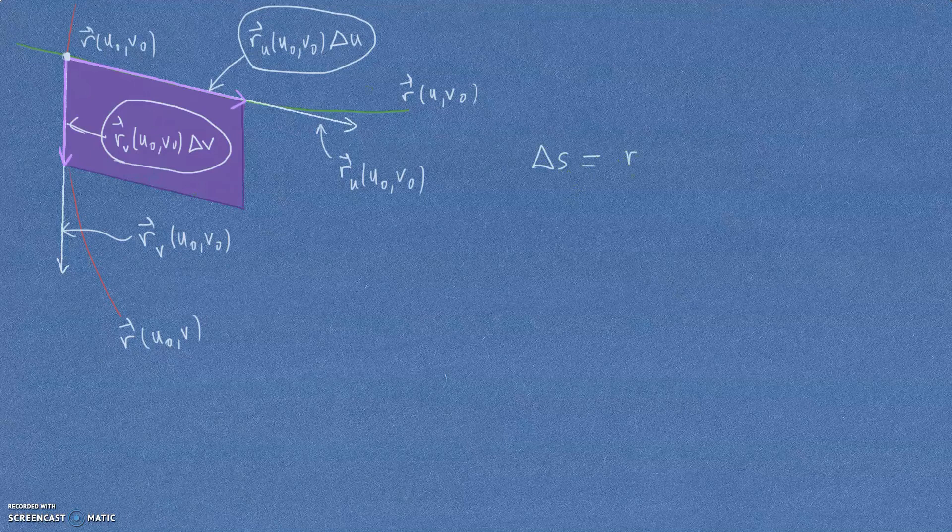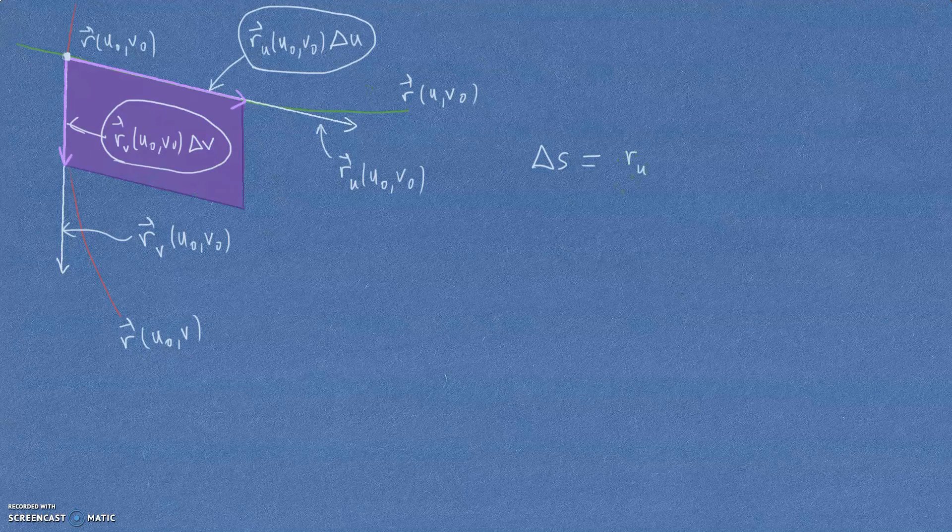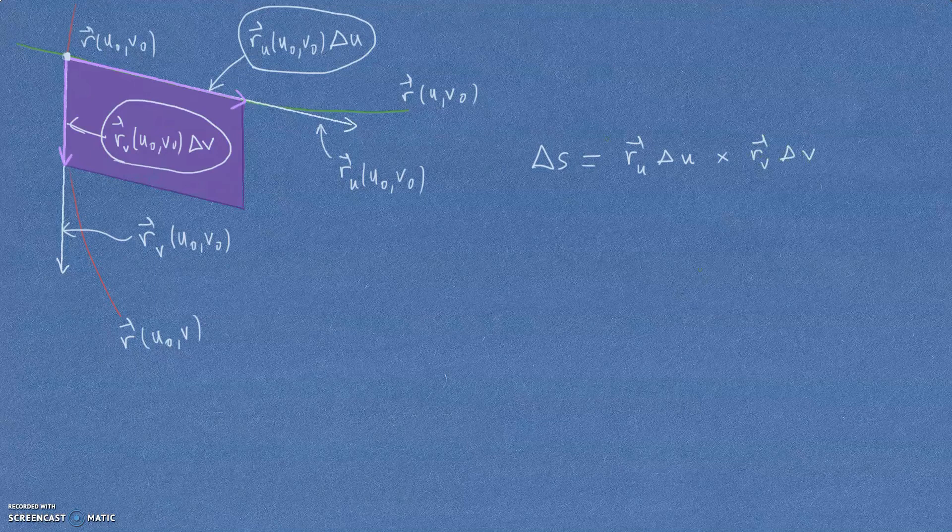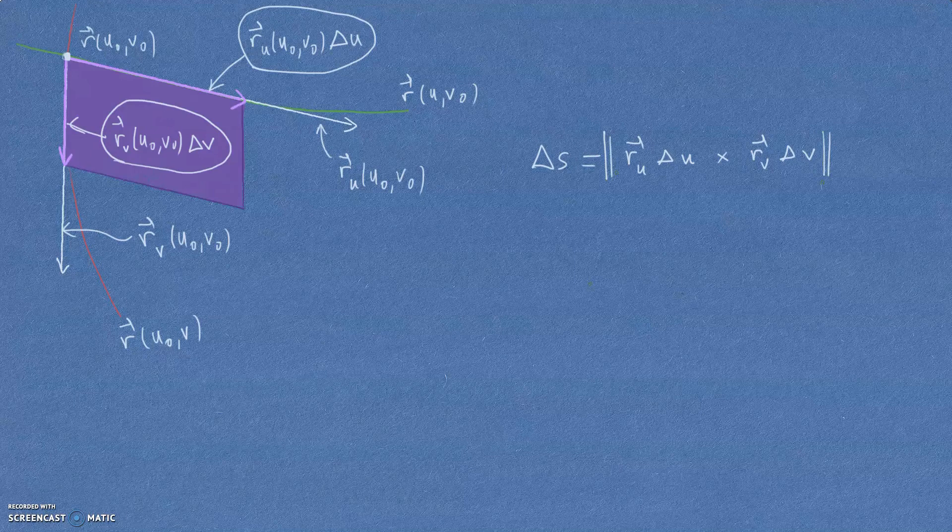Now, as I write it down, I think I'll drop the U0, V0 from the notation just to make it a little bit easier to write. But remember, they're being calculated at a particular place. And that times delta V. Okay, except, of course, we need the magnitude of that. That is what we want. The magnitude of that vector is the area of my little purple parallelogram that was drawn to that shape.